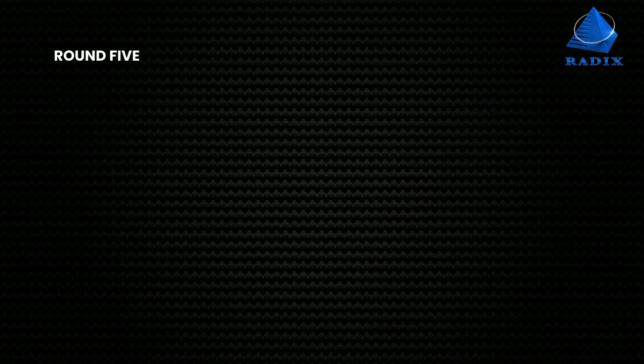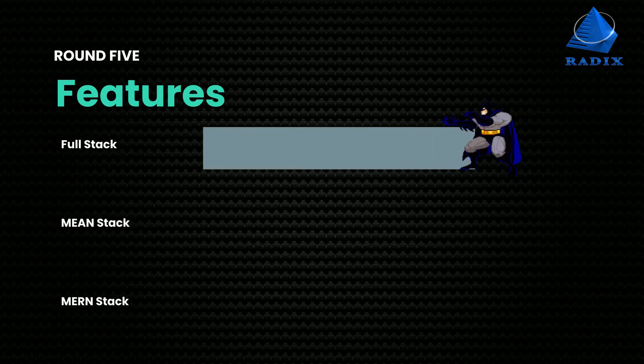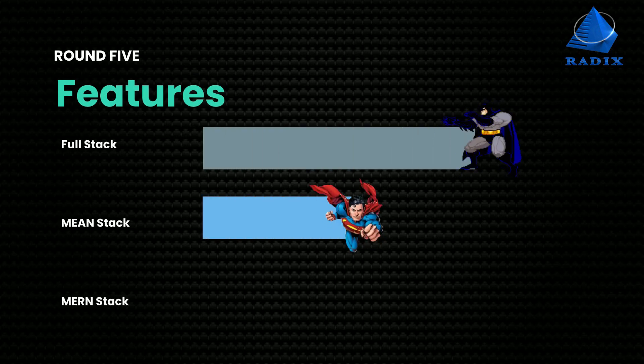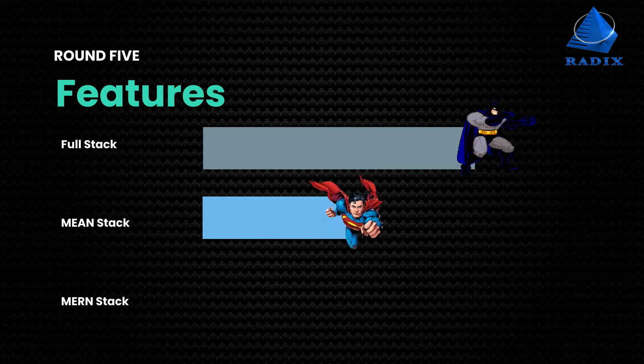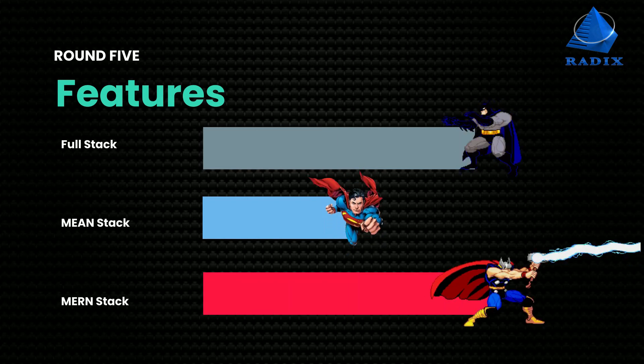5. Features. Fullstack supports a high level of features. Feature levels are moderate in the Meanstack. Mernstack also supports a high level of features.